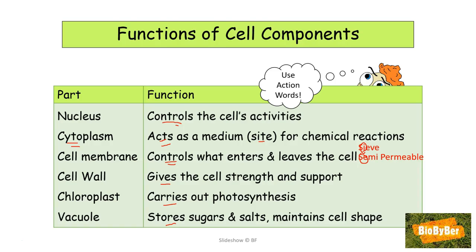The cell wall gives the cell strength and support, and for those who want more detail, it is made of cellulose. The chloroplasts carry out photosynthesis — the way plants use light to make their own food. The vacuoles store sugars and salts, help maintain the cell's shape, and when fully swollen they give the cell turgor, keeping it rigid. Vacuoles also support the cell, acting like a cushion supporting your back.